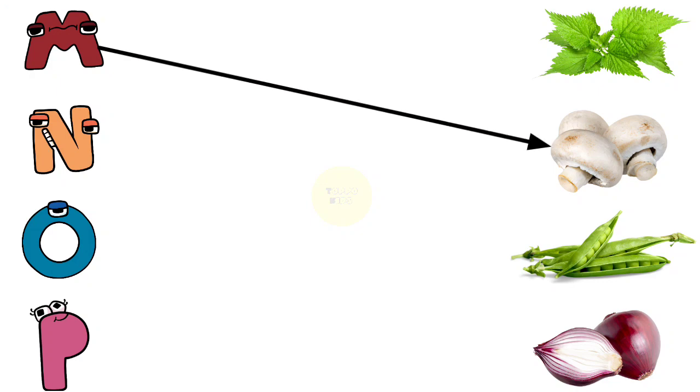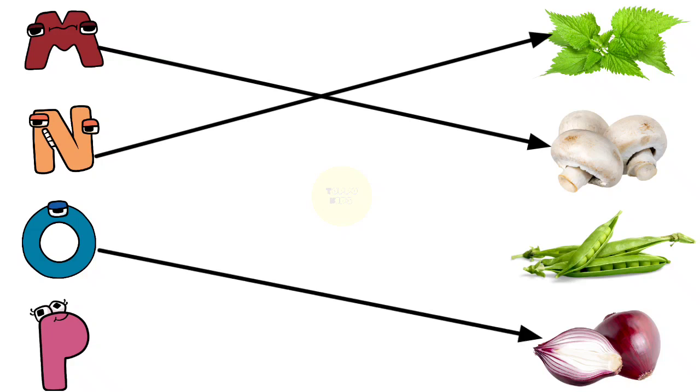M for Mushroom, N for Nettles, O for Onion, P for Peas.